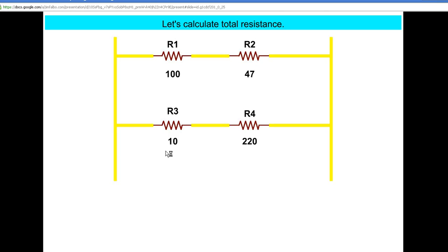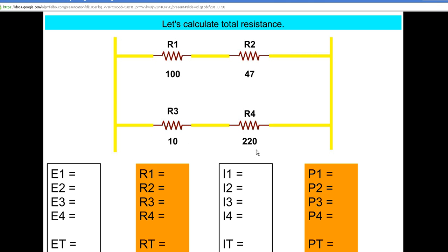Let's talk about solving total resistance when all we have available is our resistance values. We're looking at our circuit with the 100 ohm and 47 ohm in series, and that branch is in parallel with R3 and R4, which is a 10 ohm and a 220. We're going to do a circuit analysis on this once we apply voltage, but our first step is to solve for total resistance.